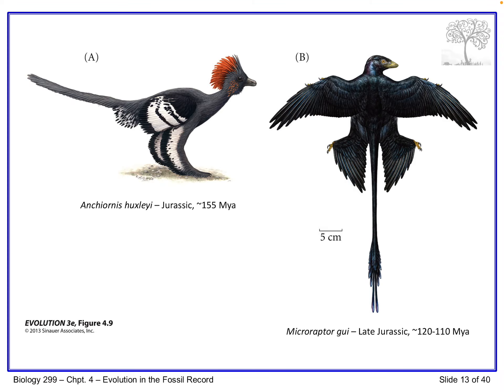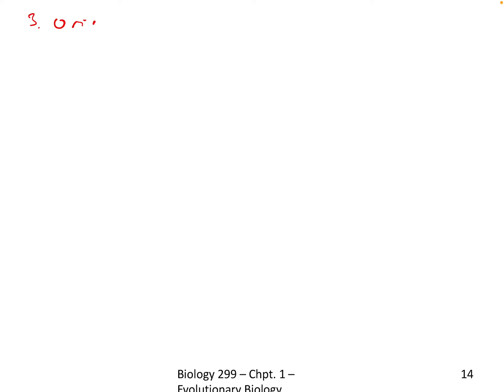For the second half of this video lecture for chapter four, we're going to talk about one more example of macroevolution. We had finished talking about the evolution of tetrapods and the evolution of birds from dinosaurs in the first part. Now we're going to talk about the third example, which is the origin of mammals. This is another good example of macroevolution in the fossil record.